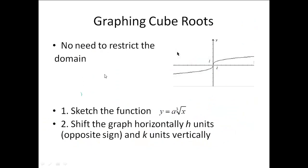Now we're going to look at graphing cube roots. When we have cube roots, we don't have to worry about restricting the domain because we don't have problems with negatives. We're going to look at how to graph y equals a times the cube root of x minus h, plus k. It's an identical setup to what we just looked at, except we have cube roots instead of square roots. The two-step process is the exact same concept.